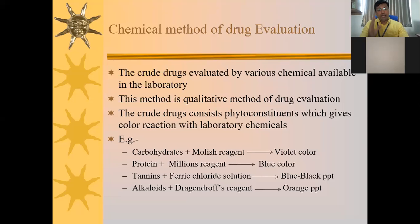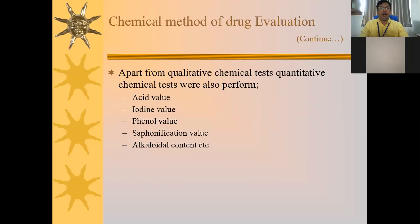Examples of color reactions: carbohydrates treated with Molisch reagent give a violet color; proteins treated with Millon's reagent give a blue color; tannins with ferric chloride solution give a blue-black color; alkaloids (a secondary metabolite) give an orange precipitate. These are various examples for the chemical method of drug evaluation.